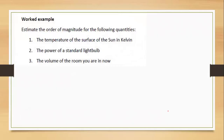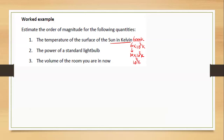Let's do an example. Estimate the order of magnitude of the temperature of the surface of the sun in Kelvin. We know it is 6000 K, which is 6 × 10³. Since the coefficient is 6, we round it to 10, giving 10¹ × 10³ = 10⁴. So the order of magnitude of the sun's surface temperature is 10⁴ Kelvin.